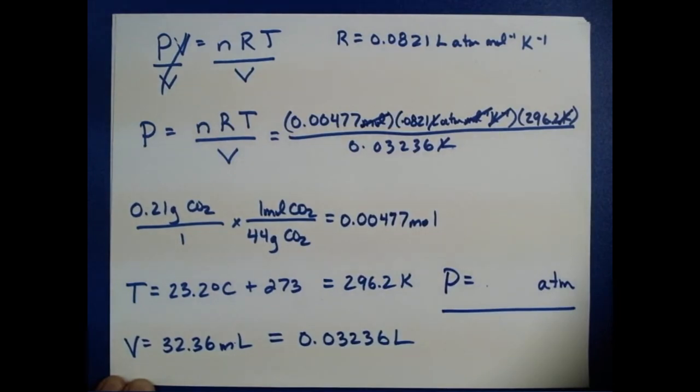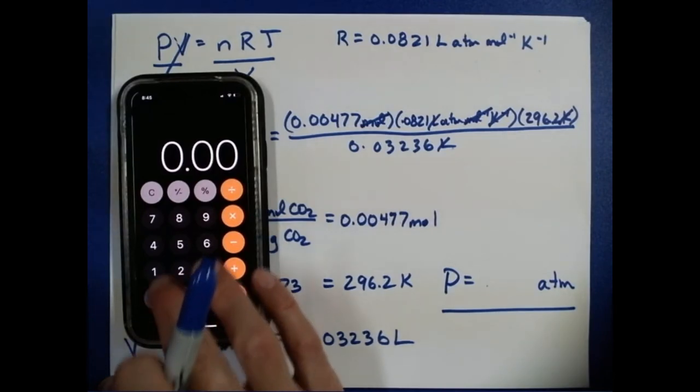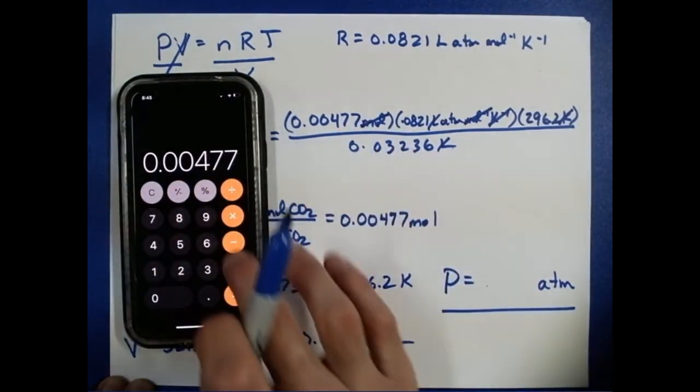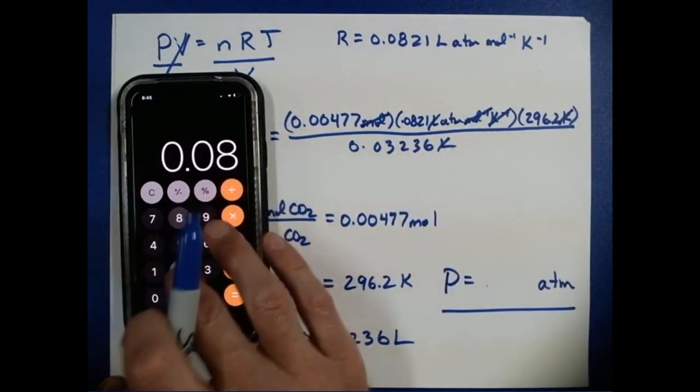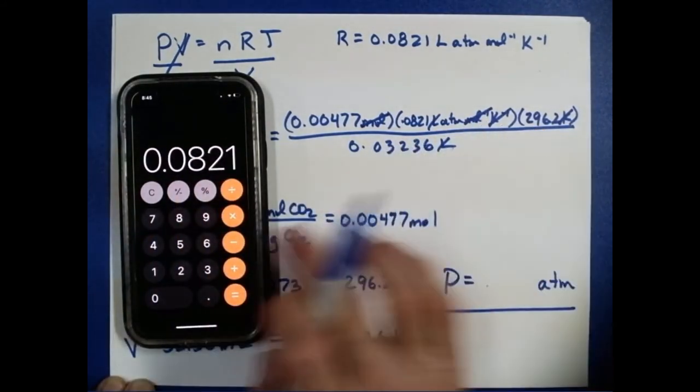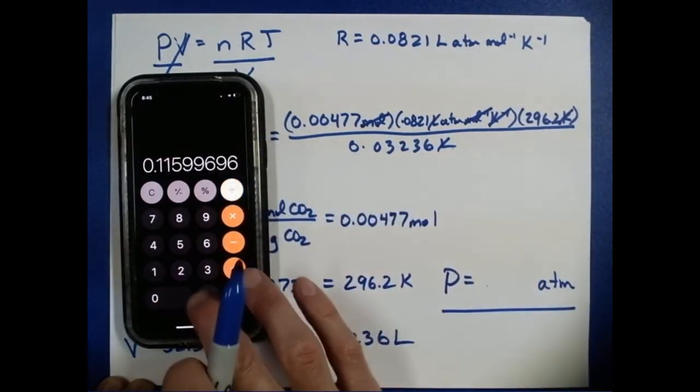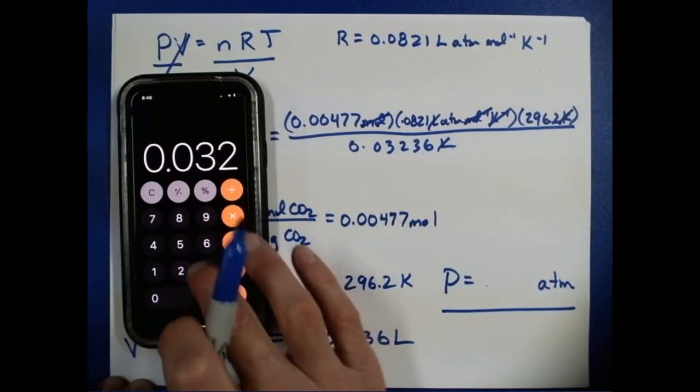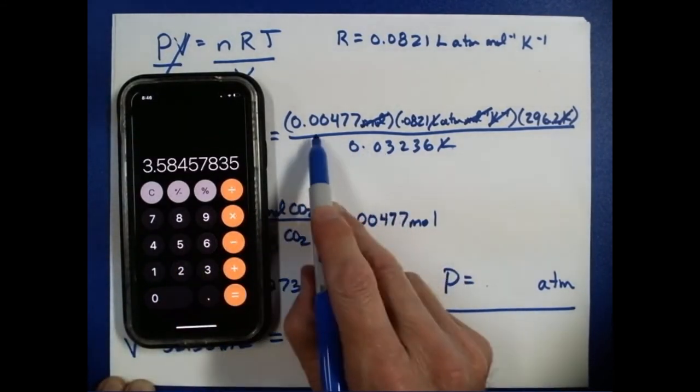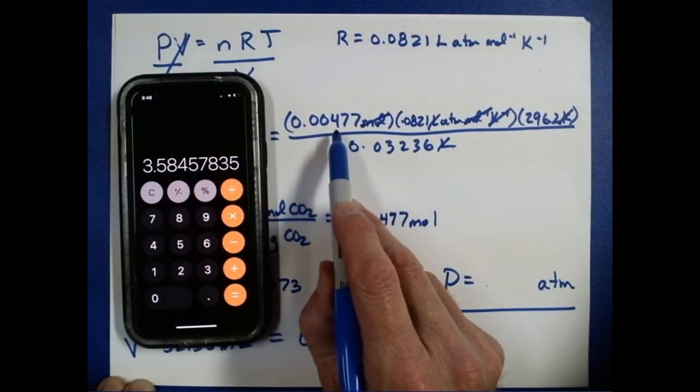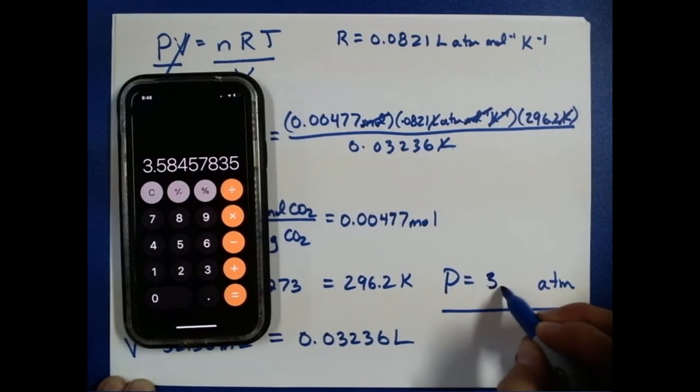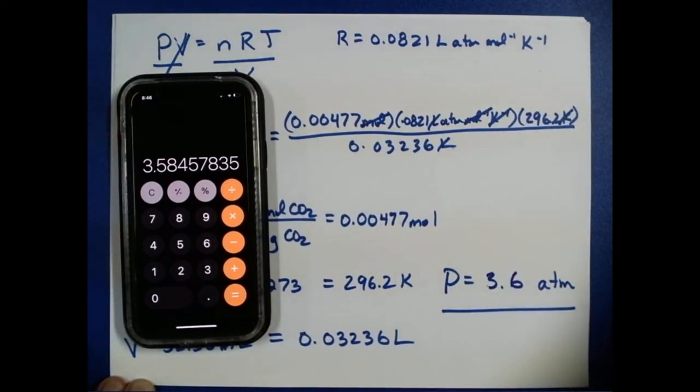So now I've just got to do the multiplication and division. All right, 0.00477 times 0.0821 times 296.2, divide that by 0.03236. And this is limited by this number here, which is only two significant figures. This is going to be 3.6 atmospheres. So we found the pressure inside that bottle of soda pop to be 3.6 atmospheres.